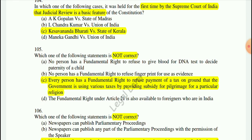Question 105: What is not correct? The wrong option is: every person has a fundamental right to refuse payment of tax on the ground that the government is using tax money by providing subsidy for pilgrimage for a particular religion — that is not a fundamental right.